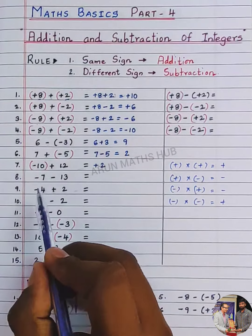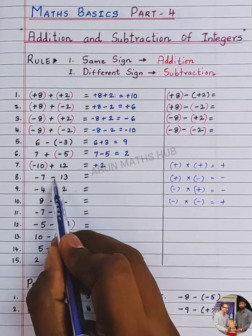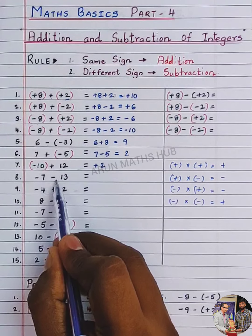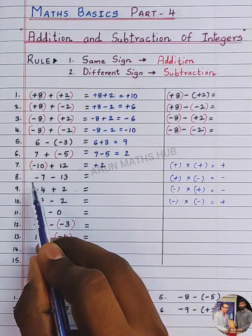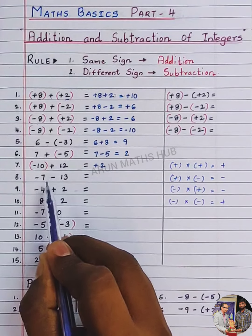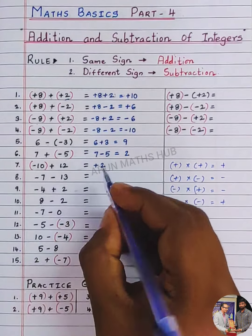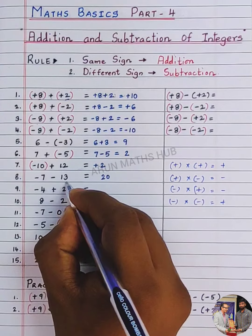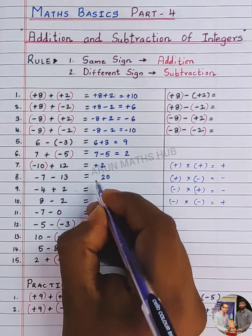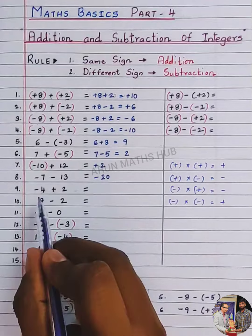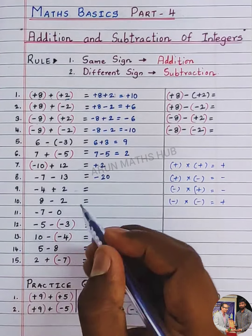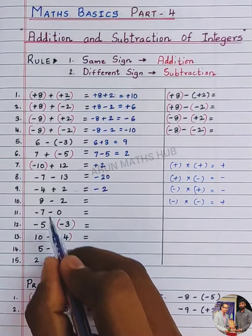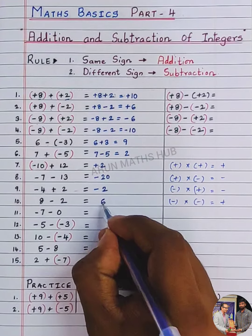Next question: signs are same — minus 7, minus 13, both minus. If the signs are same, you should do addition. 7 plus 13 is 20. What is the bigger number's sign? Bigger number is 13, its sign is minus — put minus, so minus 20. Here you have different signs, do subtraction: 4 minus 2 is 2, bigger number sign is minus. Then 8 minus 2 is 6.